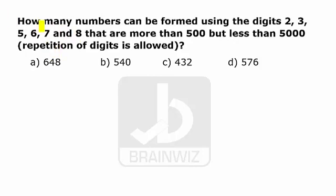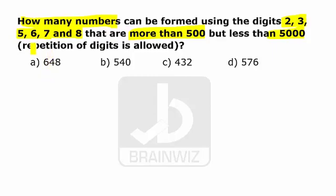In this question, we are asked how many numbers can be formed using the digits 2, 3, 5, 6, 7, and 8, which are more than 500 but less than 5000. A condition of the question is that repetition of digits is allowed.